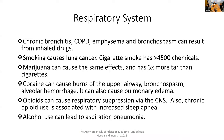In the respiratory system, we see chronic bronchitis, COPD, emphysema, and bronchospasm from inhaled drugs. We know smoking causes lung cancer and has thousands of chemicals. Marijuana — we don't know as much about the long-term effects, but it may produce similar effects and has more tar than cigarettes. Cocaine can cause respiratory illness by burns of the upper airway, bronchospasm, alveolar hemorrhage — bleeding into the alveoli of the lungs — and pulmonary edema. Opioids can cause respiratory suppression through the central nervous system, decreasing the drive to breathe, and chronic opioid use is associated with increased sleep apnea. Alcohol use can lead to aspiration pneumonia.